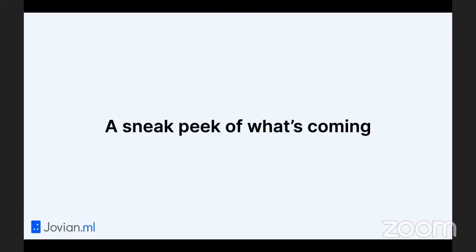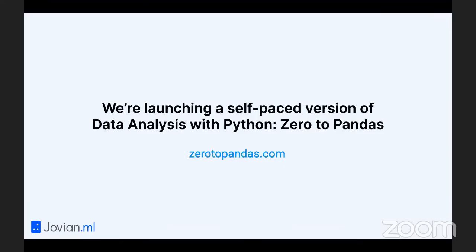Jovian is launching a self-paced version of Data Analysis with Python Zero to Pandas. If you have not completed any of the assignments or the course project, you can make a submission now and all your progress will carry over. Share zerotopandas.com with friends so they can work through the course too. There will still be some live sessions with deadlines, but the course will remain open. All assignments will be evaluated using the automated system and course projects evaluated manually.